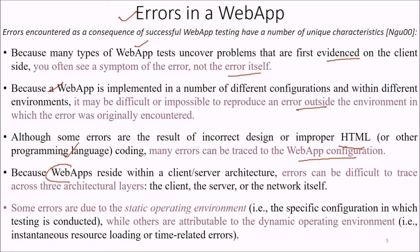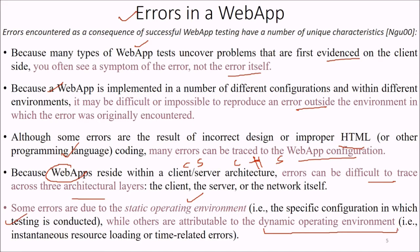Since web apps reside in a client-server architecture, errors can be difficult to trace across the three-layer architecture, which is the client, the server, and the network itself. Some errors are due to a static operating environment, like the specific configuration in which testing is conducted, while others are attributed to a dynamic operating environment, like instantaneous resource loading or time-related errors.